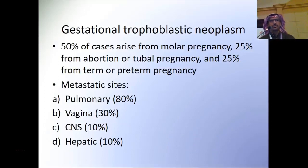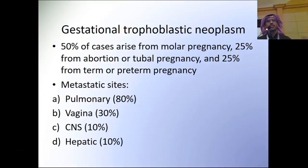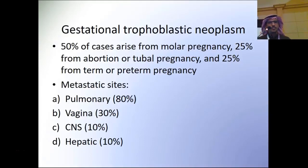50% of cases of GTN usually arise after molar pregnancy, but it can occur after abortion or tubal pregnancy in around 25%, and after term or preterm pregnancy in around 25%. The most common site of metastatic disease is pulmonary, around 80% of patients; vaginal 30%; CNS usually 10%, with all CNS metastasis patients having concurrent pulmonary or vaginal metastasis; and hepatic around 10%.